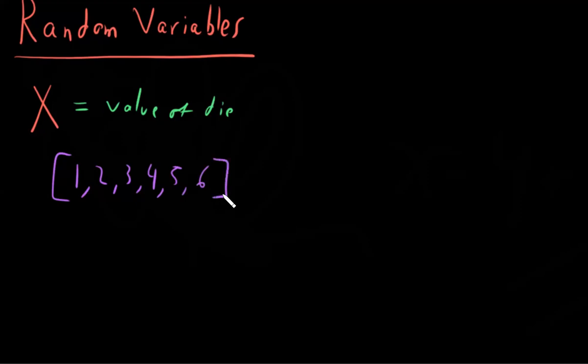So X is the random variable which describes the value of a rolled die. And we know the bounds of that, so we know the minimum and the maximum numbers that this random variable can take on. But at any given time, if we say what is the value of X, we don't actually know. It can be any of these because that's what it means to be random. A random variable is one that changes its output without any known fixed point.